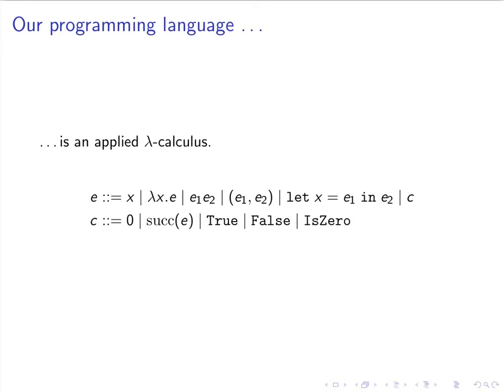What are constants? Constants can be numbers—natural numbers to be precise, that's zero—the successor function, the booleans true and false, and we can test if a value is zero. That's all we have. We don't have lists or data types or any other fancy features; we're trying to keep things simple here.